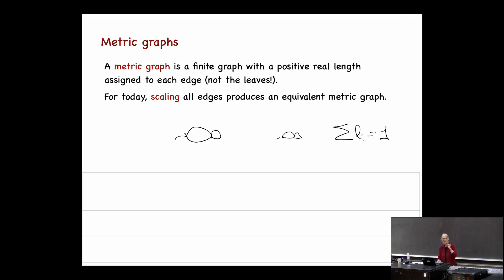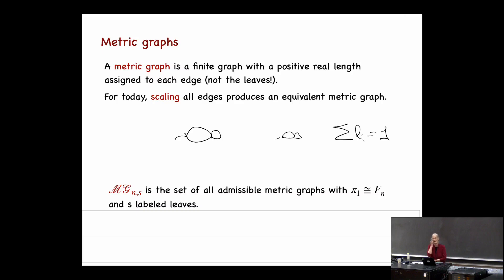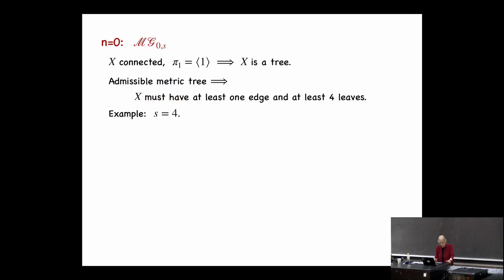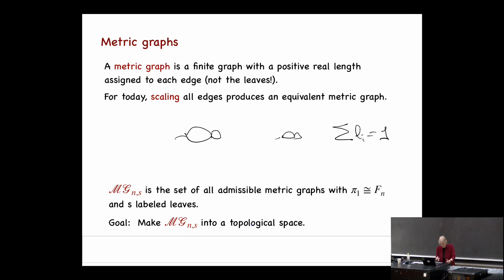MG_{n,s} is now the set of all admissible metric graphs with fundamental group F_n and s labeled leaves. This is just a set at this point, and what I want to do is make it into a topological space. I'll do this first in the two extreme cases: first when there are no loops (n=0, so the rank of the free group is 0), and second when the graph has no leaves.